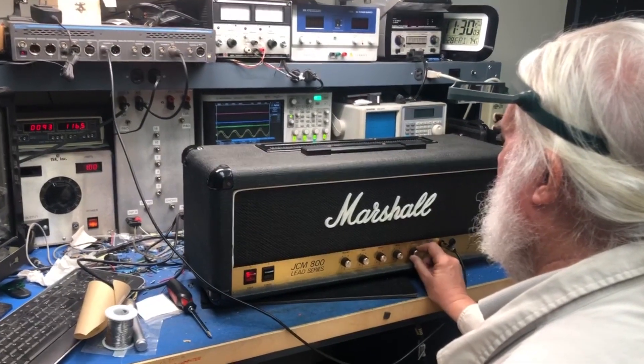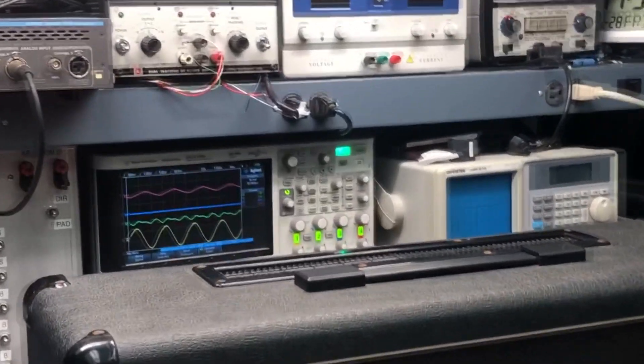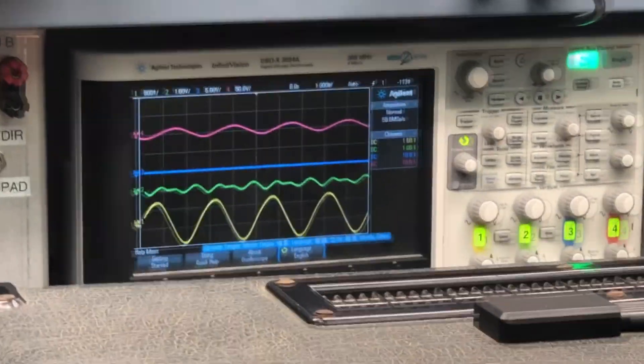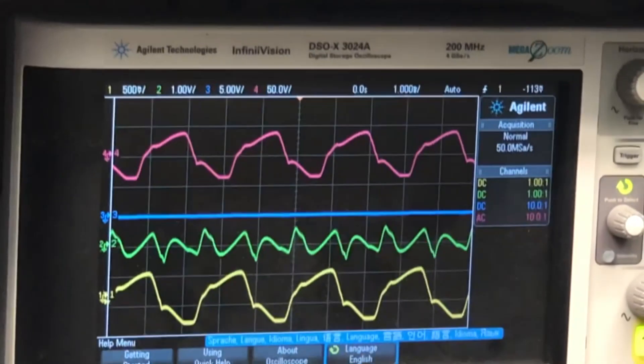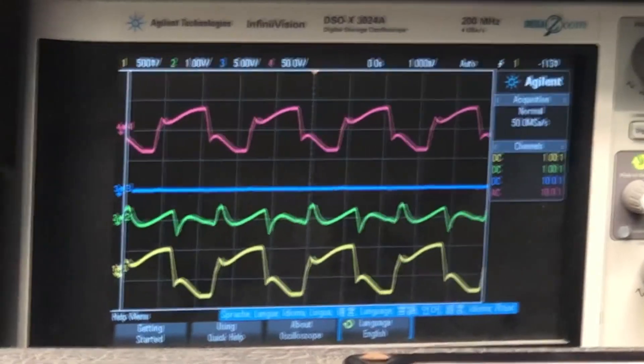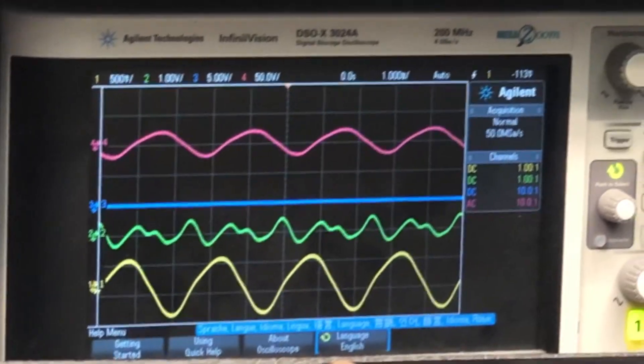But if you turn the master down below the point of power amp breakup, then you get this other kind of breakup instead. You can hear all that second harmonic coming in.